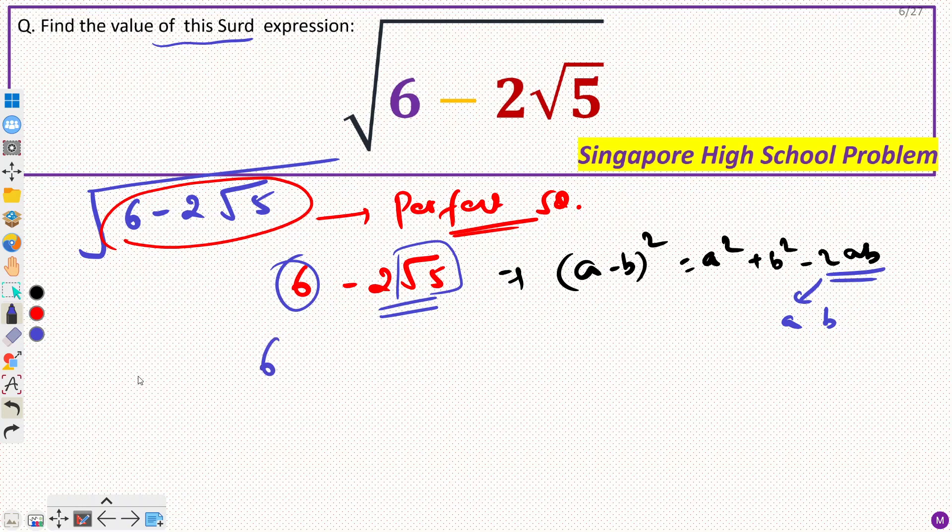So, can I write this as, let's say, let's say I write this as 2 into root 5 into 1. So, this would be a, this would be b. Now, if I square this, then I will get 5. If I square this, then I will get 5 plus 1 would be 6.